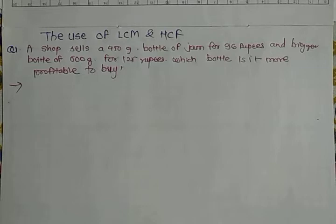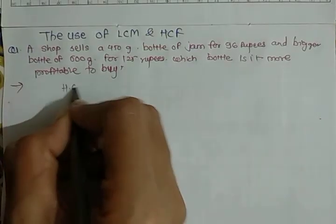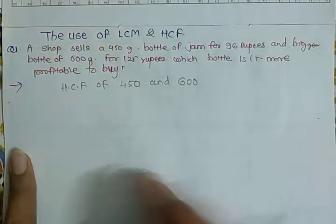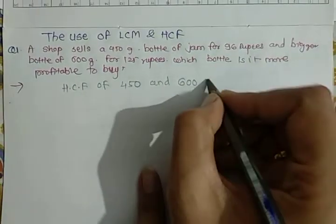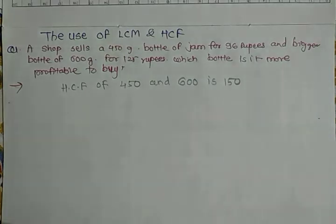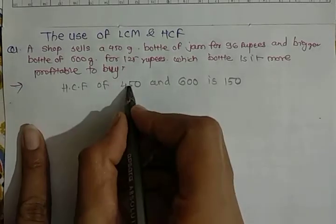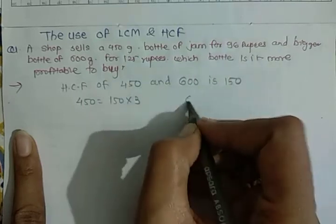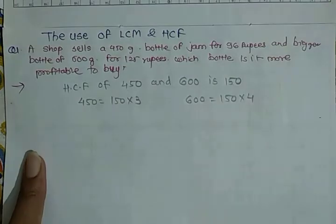So let's use 150, the HCF of 450 and 600, to compare. The HCF of 450 and 600 is 150. By using factorization method, first find out the HCF of 450 and 600. If you compare, 450 means 150 multiply by 3, and 600 means 150 multiply by 4.